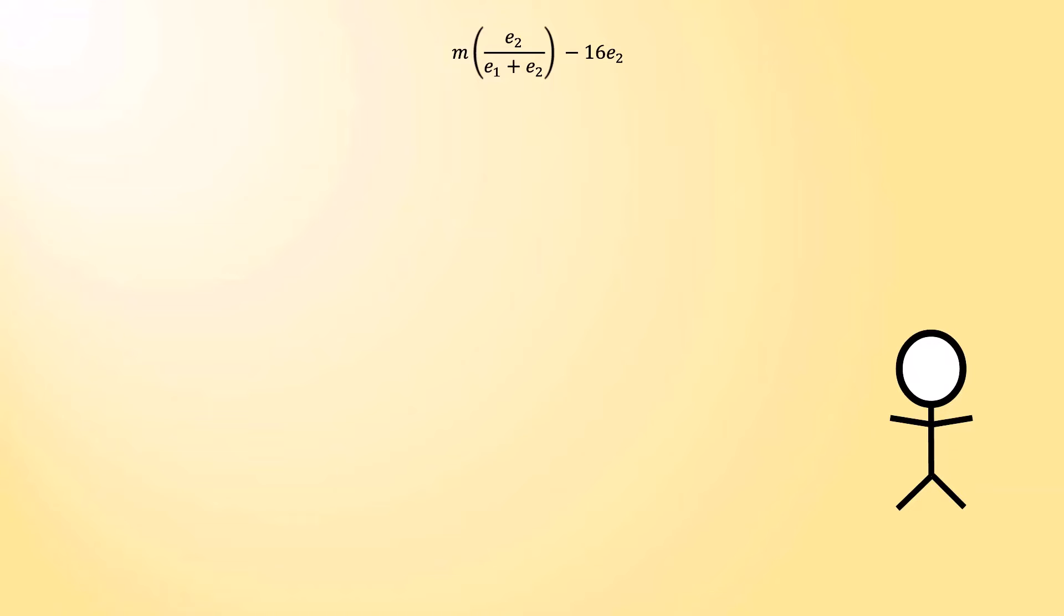To help visualize this, think about the following graph. On the horizontal axis, we have your opponent's effort level. On the vertical axis, we have your opponent's payoff. When your opponent exerts no effort, they get nothing.